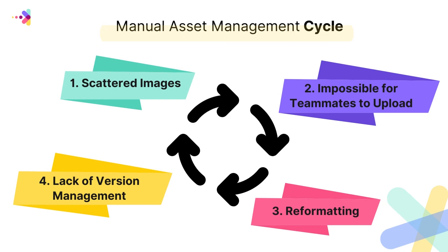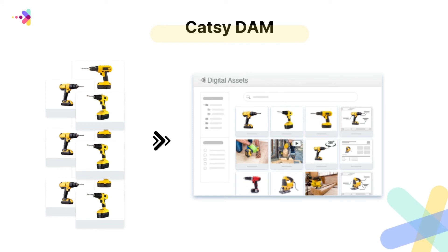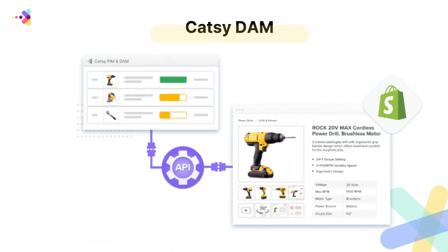So to prevent this exhausting and time-consuming cycle from draining your resources and ruining your assets, you need a solution. And our solution is CATSEE Digital Asset Management. With CATSEE, you can take your photos and dump them into a single source of truth library for all of your assets, any format for any product. Working in conjunction with the API, you can then upload those images directly to your Shopify store.